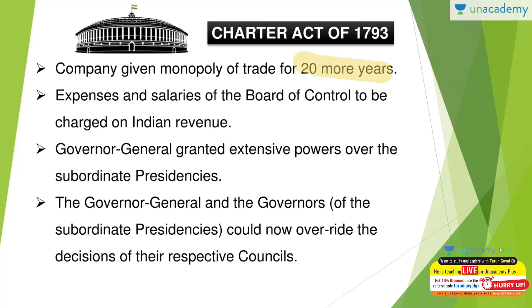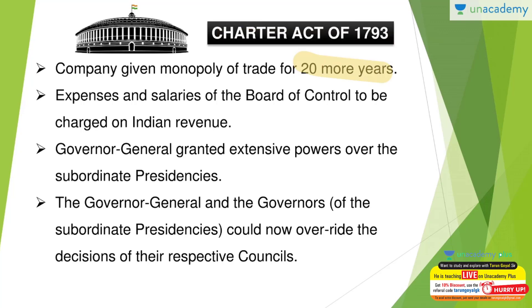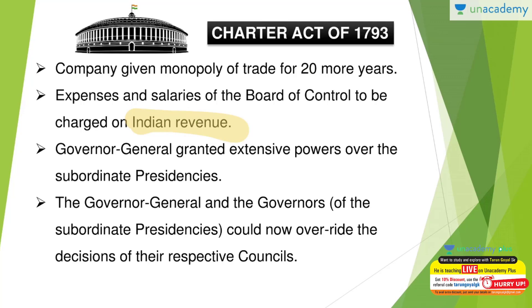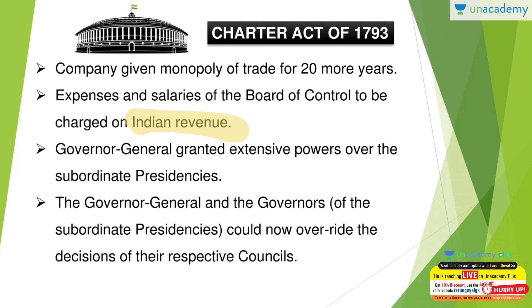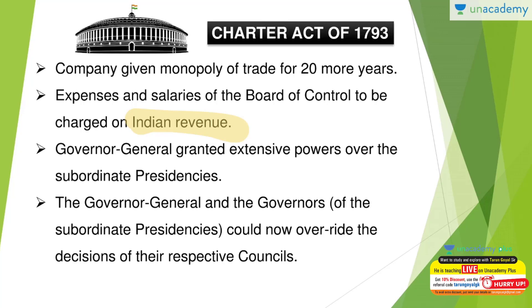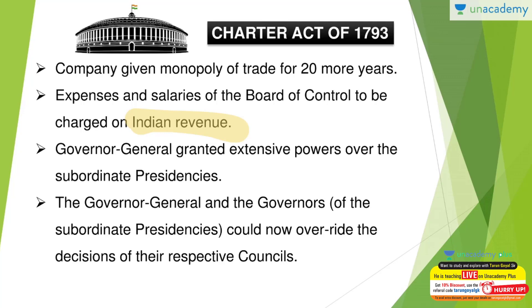The Board of Control, which was created under Pitt's India Act, had all its expenses now to be charged on Indian revenue. The president and all members — their salaries and expenses were all to be charged on Indian revenue. Also — and this is not written in the notes so please add it — the company had to pay the British government 5 lakh rupees annually from the Indian revenue. Note it is rupees, not pounds.